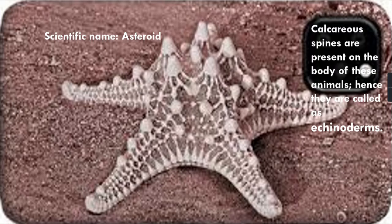Calcareous spines are present on the body of these animals, hence they are called echinoderms. Calcareous spines or calcareous plates means calcium carbonate — they are rigid, very rough and tough. If you hold it, it feels like a bone-type structure. So this is a bone-type organism called echinoderms.